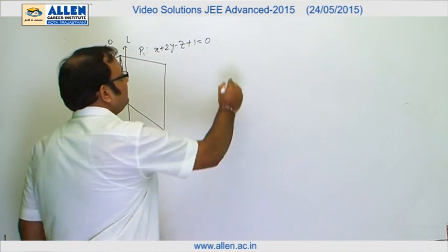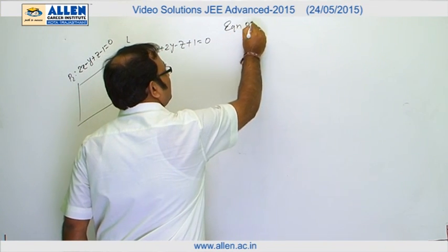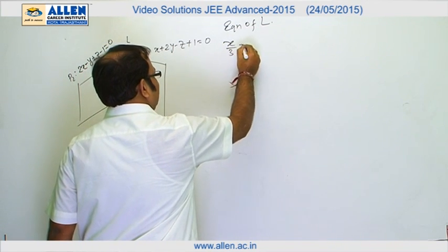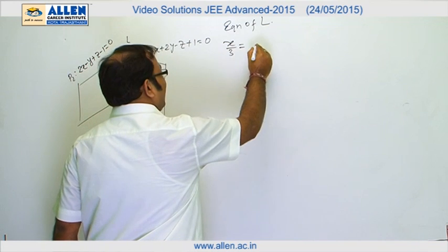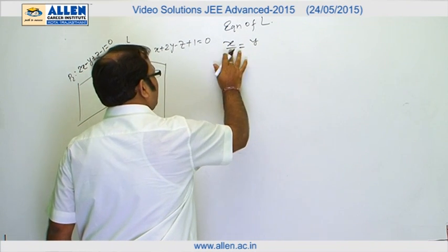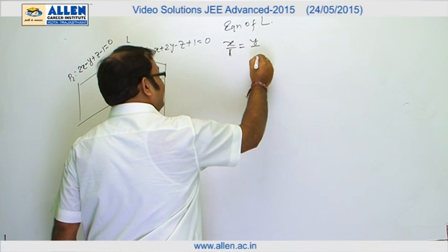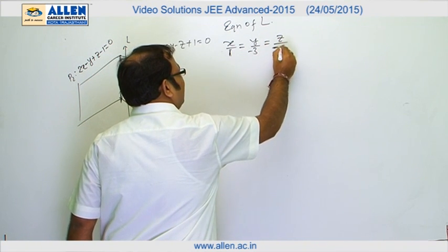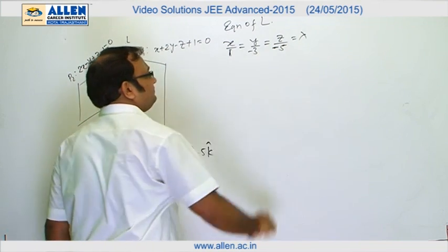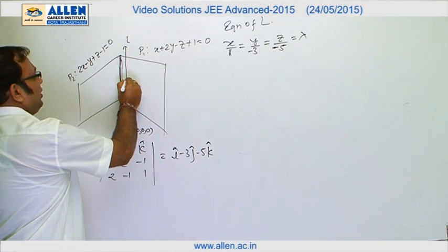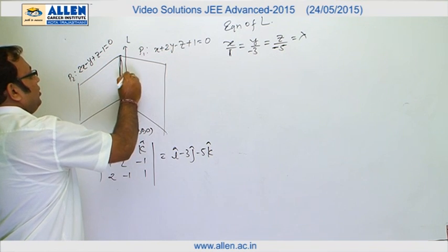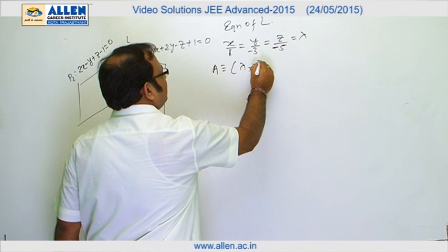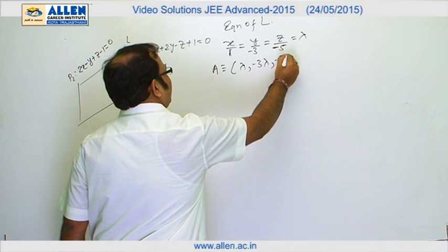The equation of line L can be written as x/1 equals y/(−3) equals z/(−5) equals λ. Therefore, the coordinates of any point A on line L can be assumed as (λ, −3λ, −5λ).